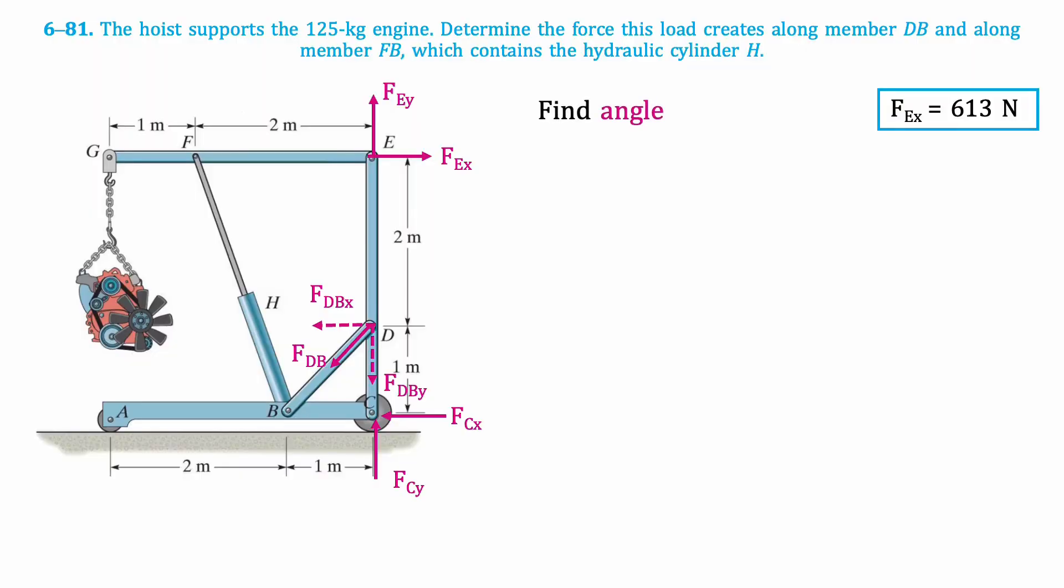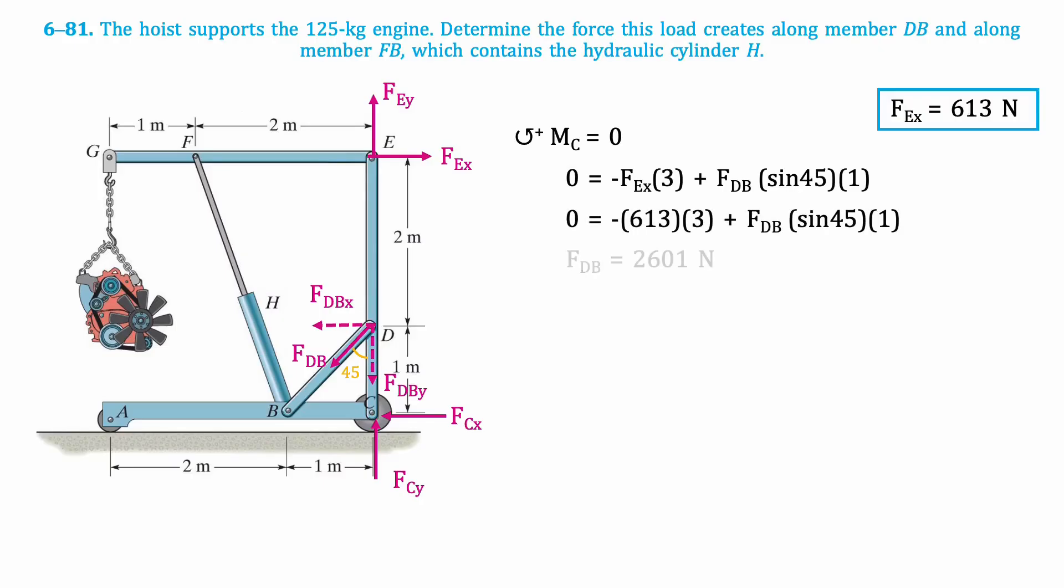Next we'll find the angle made by member DB and the horizontal using the following equation. The result is 45 degrees. Then we'll take the moment about point C. Since both the components of C, the Y component at E, and the Y component of FdB pass through point C, they are not included in this calculation. This is the resulting equation. We can substitute the value we previously found for FEX into this equation, and then isolate for FdB. The result is 2.6 kilonewtons.